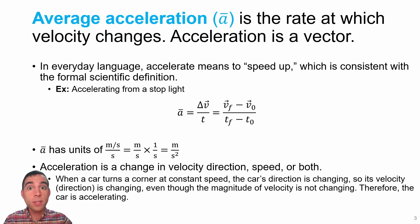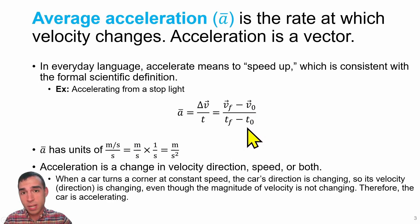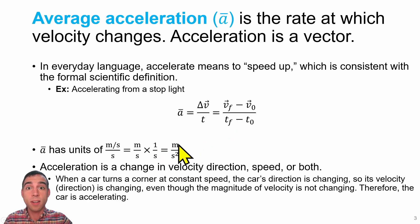This means that we'll have units of meters per second in the numerator and units of seconds on the bottom. So we'll have meters per second over seconds, and when we simplify that, we get units of meters per second squared for acceleration.